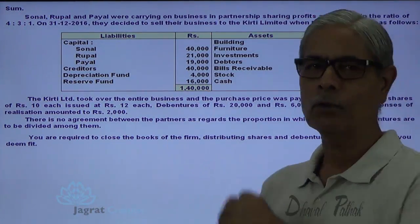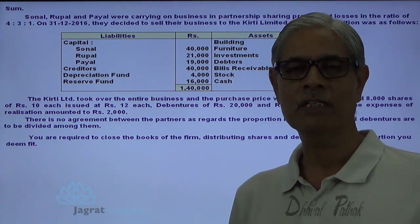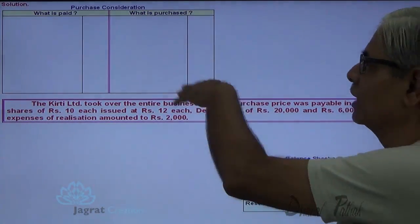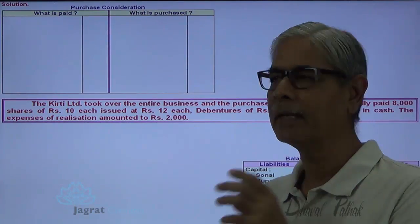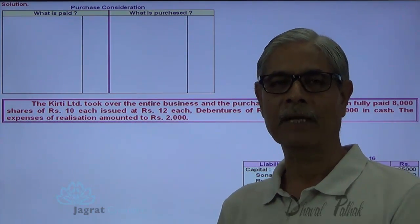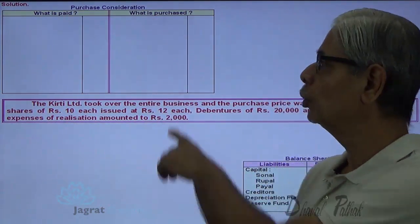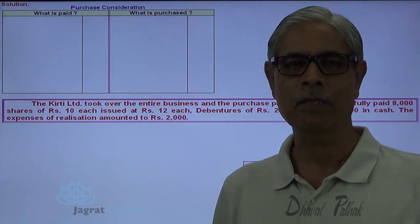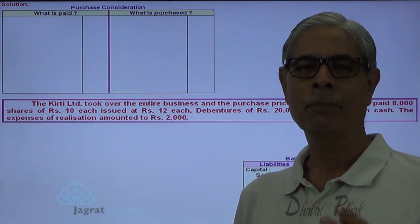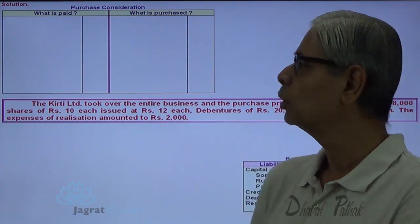The purchase price is already given on the basis of total payment: 8,000 shares × Rs. 12 = Rs. 96,000, plus Rs. 20,000 debentures, plus Rs. 6,000 cash. There is no need to find out the goodwill since the purchase price is readily available. However, I will prepare a working note with academic interest comparing net assets with the total payment to identify goodwill, as students generally follow this practice.